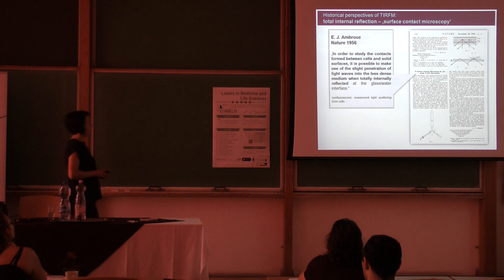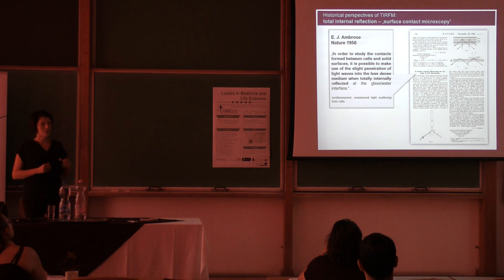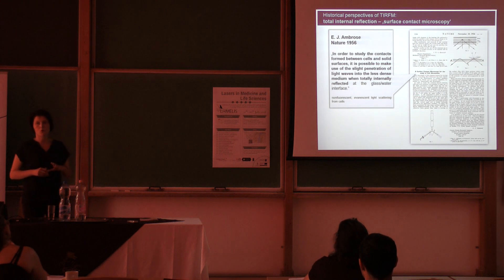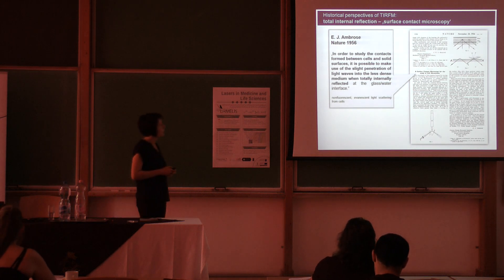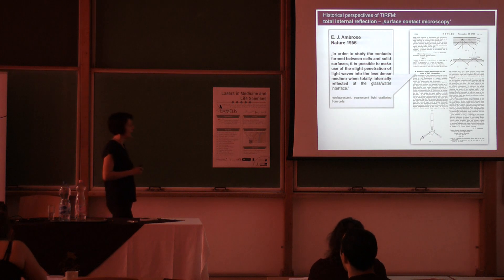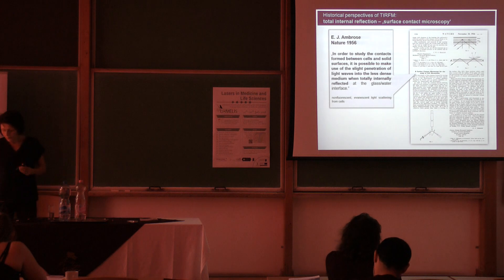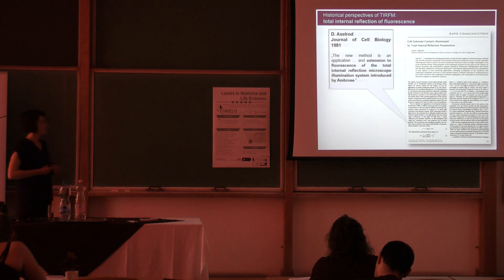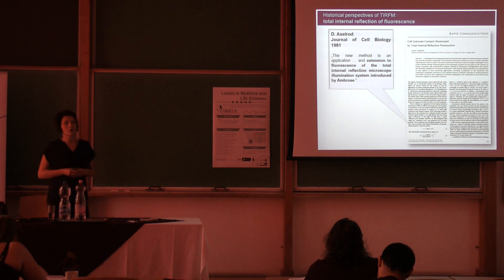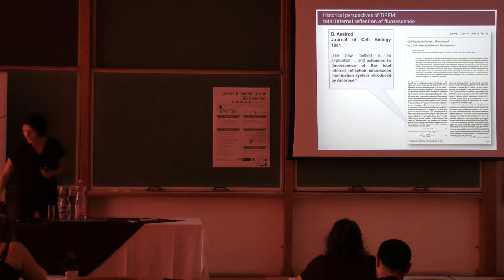From the historical perspective, the use of total internal reflection is relatively early, and it is credited to E.G. Ambrose. Ambrose was interested in studying cell surface and cell–extracellular matrix contacts using a conventional light microscope — no fluorescence. He realized that, to cite him, it was possible to make use of the slight penetration of light waves into the less dense medium when totally internally reflected, allowing specific visualization of the boundary of the cell near the surface. The idea of coupling total internal reflection with fluorescence microscopy was developed by Daniel Axelrod, in the first publication describing the physical principles of how this technique can be implemented.